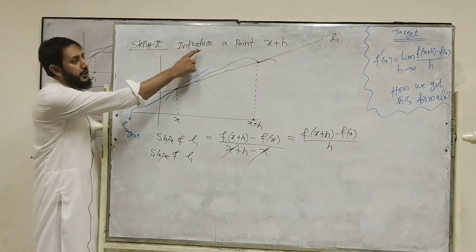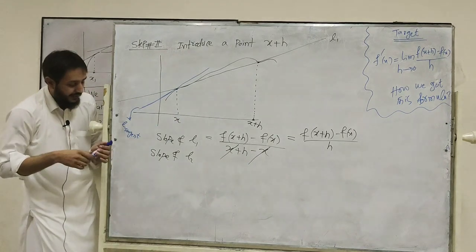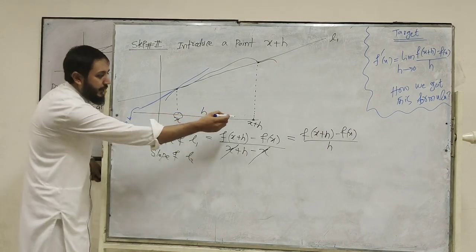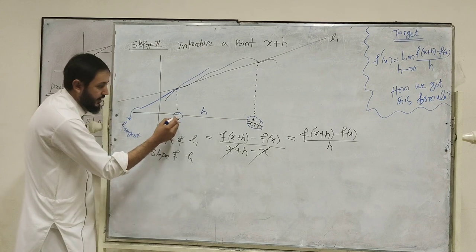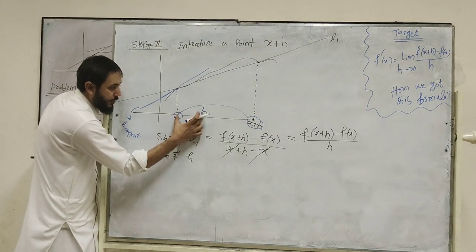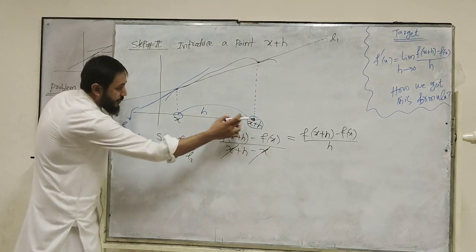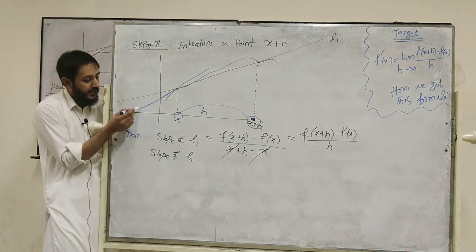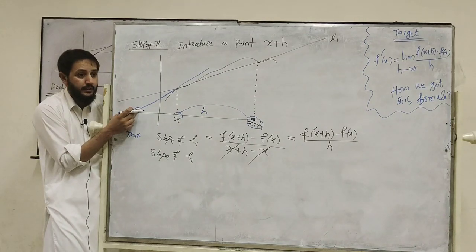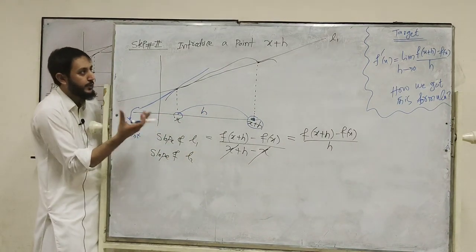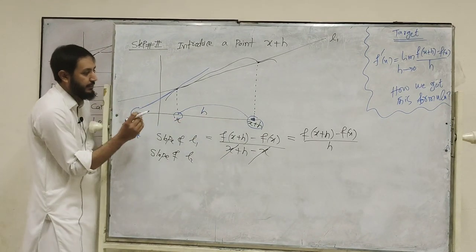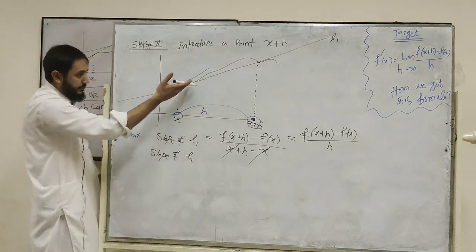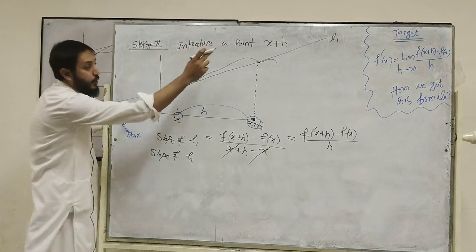Step two: introduce a point x plus h. This point x is fixed — like one, two, three — and we have added h to it, arriving at a new point x plus h. Now we have two points. We want a formula for the slope of this blue tangent line. Join the two points on the graph — we get a line. Call this l1, the secant line.